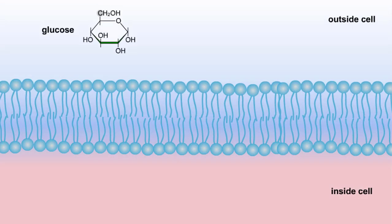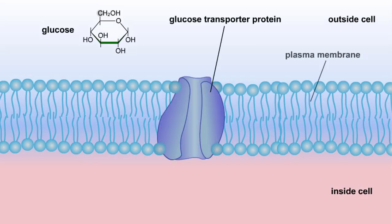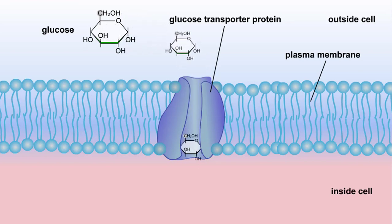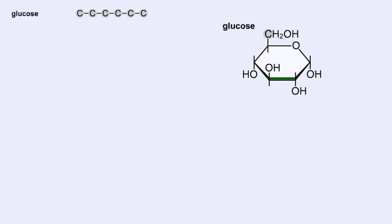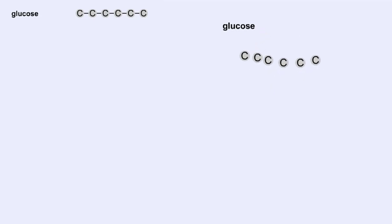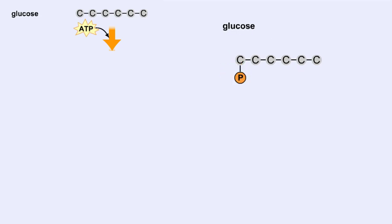Glucose enters the cell from the bloodstream through a protein transport molecule in the plasma membrane. Once inside the cell, it enters the glycolysis pathway. The first step in glycolysis is the addition of a phosphate group to the number 6 carbon of glucose. A molecule of ATP is utilized, and glucose is transformed into glucose 6-phosphate.